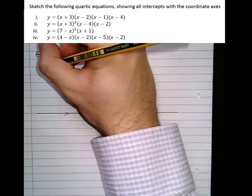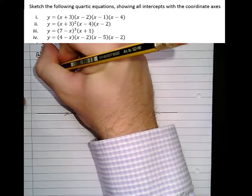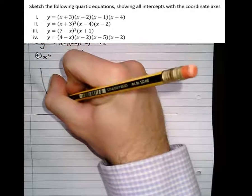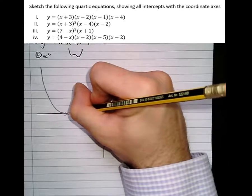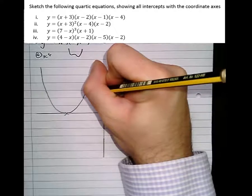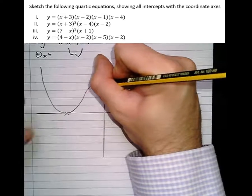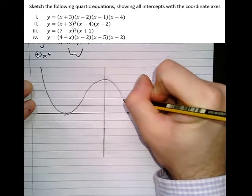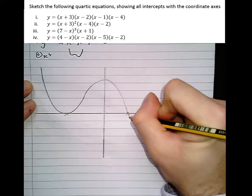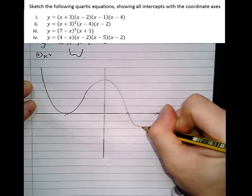So we're starting to sketch it. It starts at the top left because it's a positive quartic, but when it hits the double root, it hits it, then turns back on itself again. Then back down, single root, and back up again.